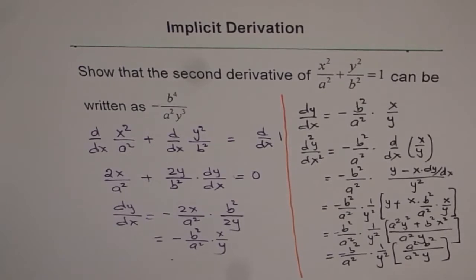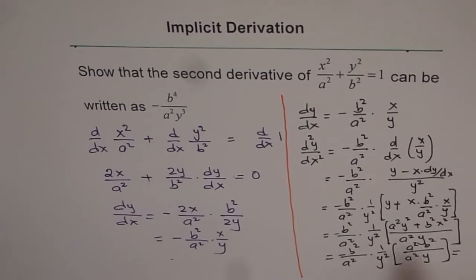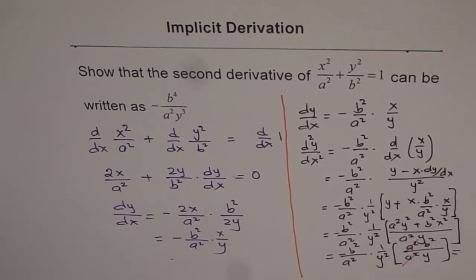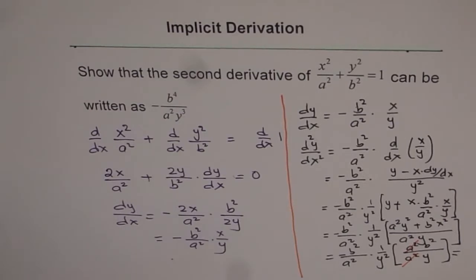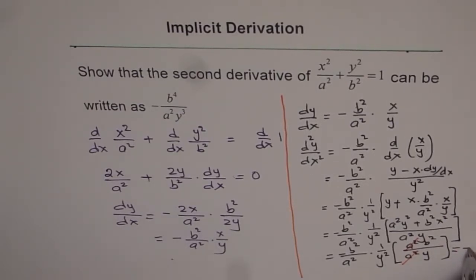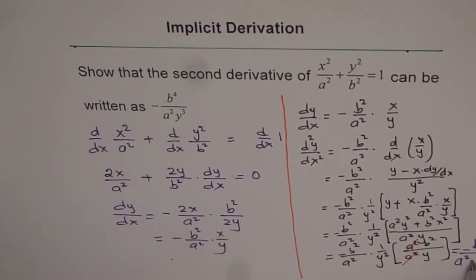We get minus b squared over a squared times 1 over y squared, with numerator a squared b squared and denominator a squared y. You can see the a squared and a squared cancel off, and y squared times y gives y cubed. We have b times b squared which is b to the power of 4. Therefore, we get this answer as minus b to the power of 4 over a squared y cubed.